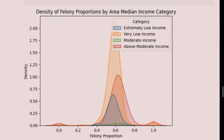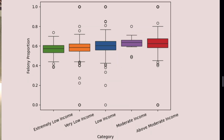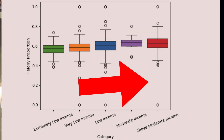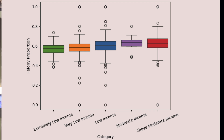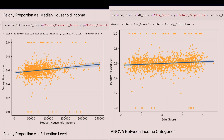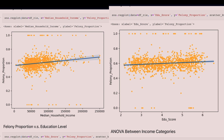Looking at our density plot, very low income and above moderate income actually have the highest proportion of felonies. According to our box plot, there is a slight positive correlation between median income and the proportion of felonies. However, in the density plot, there are more crimes committed in lower income areas to begin with. When comparing the two linear regression graphs, both of these correlations are very weak.